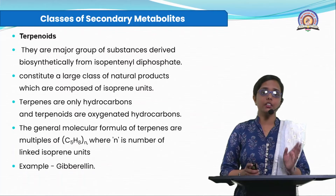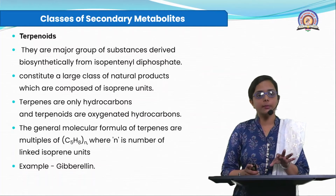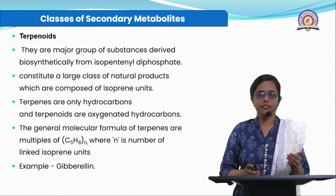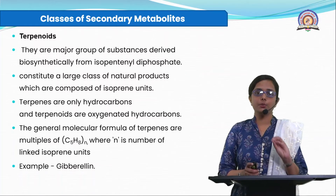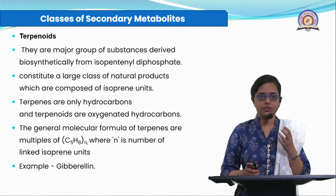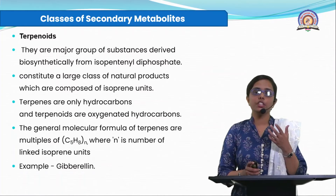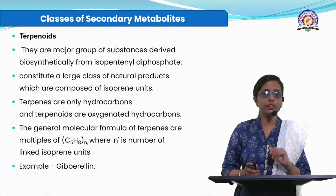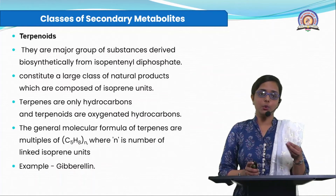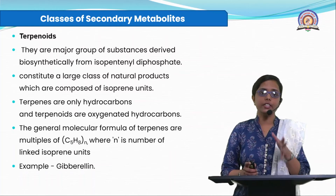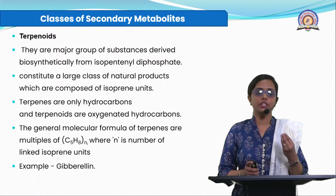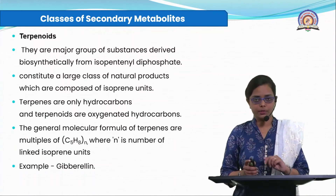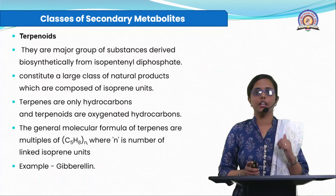Secondary metabolites are the active principles we use. Their different classes include terpenoids, alkaloids, glycosides, and more. For example, Adathoda vasica is used for cough remedy — the plant doesn't have cough, but it produces alkaloids to defend itself against herbivores like goats and cows. We exploit this defensive secondary metabolite activity for our herbal remedy. So secondary metabolites are the active principles that provide medicinal properties.